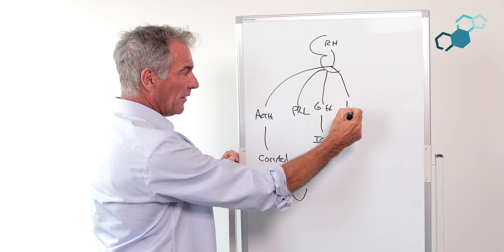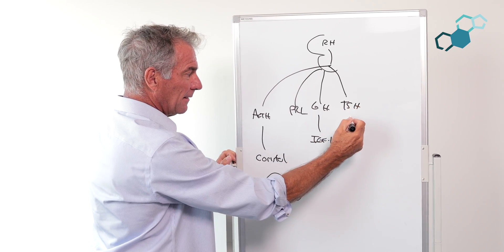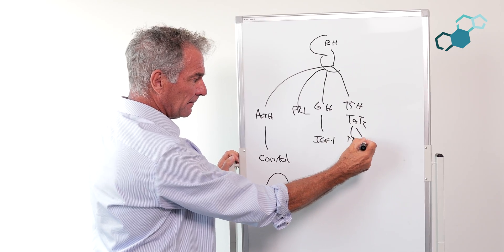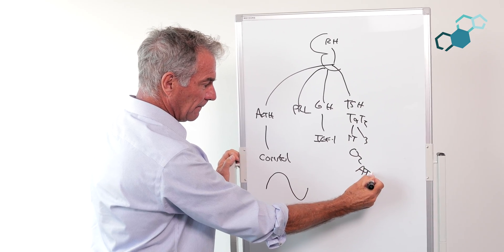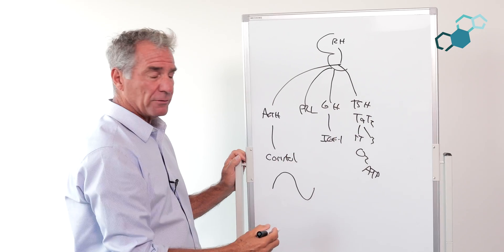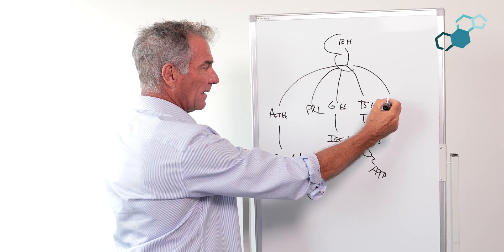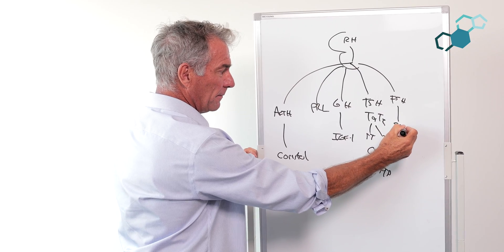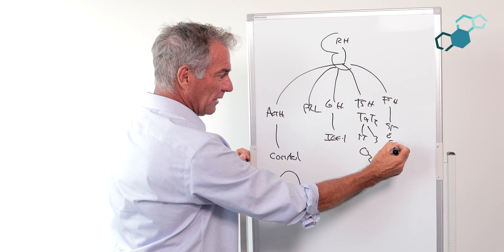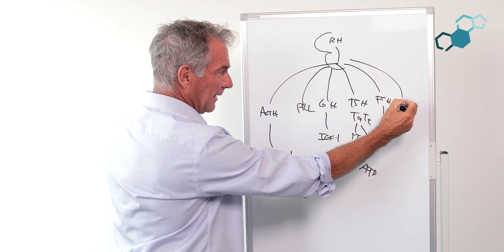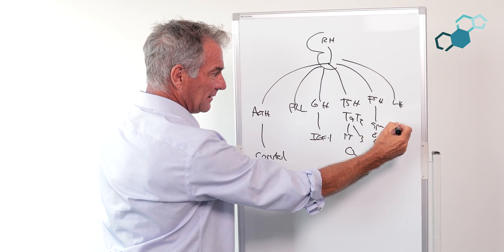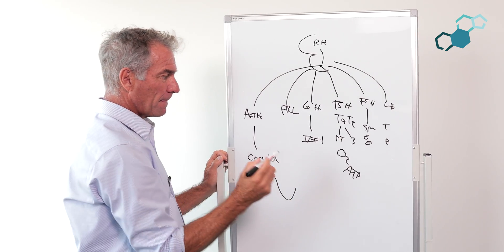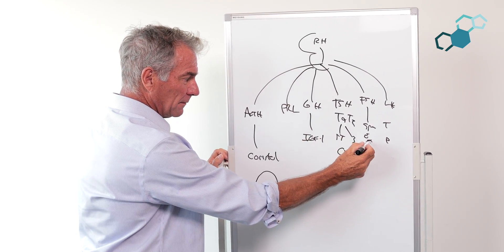Thyroid, this wakes oxygen into energy. There's optimal numbers for all of those. FSH in men make sperm, in women make egg which makes estrogen. LH in men makes testosterone, in women it makes progesterone.